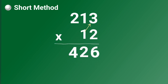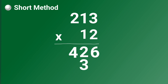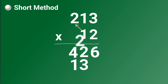First, one times three equals three. Next, one times one equals one. And lastly, one times two equals two.